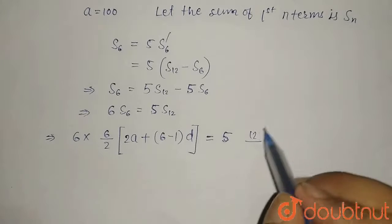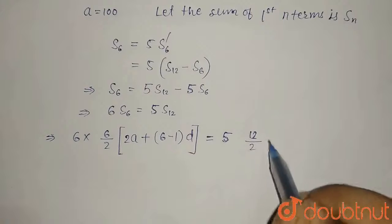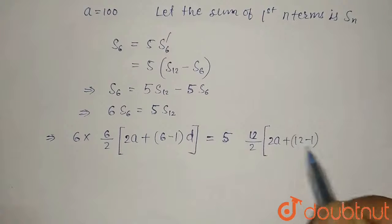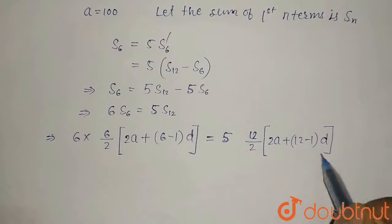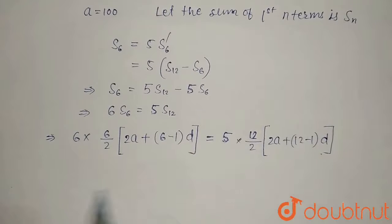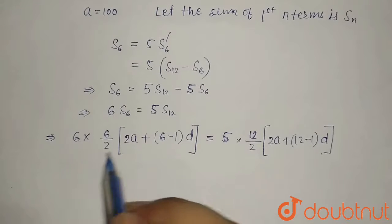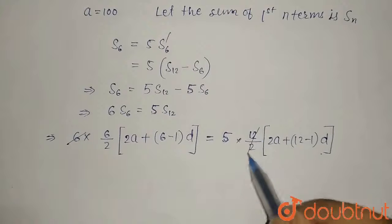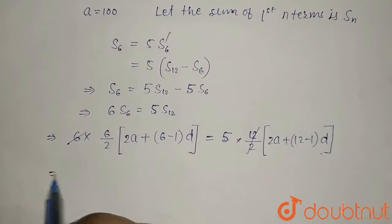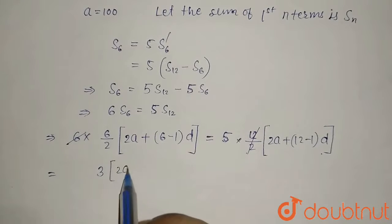Similarly, S_12 will be (12/2)[2a + (12-1)d]. Further we can simplify this: 6 will cancel out, that equals 3(2a + 5d).